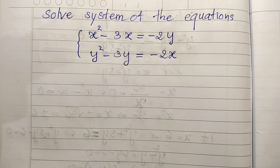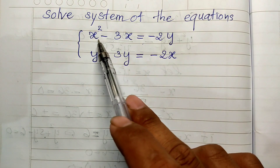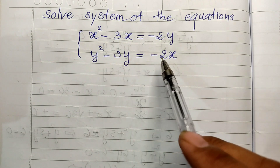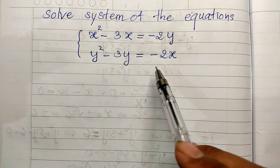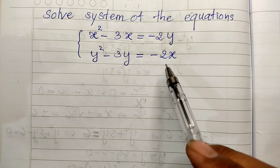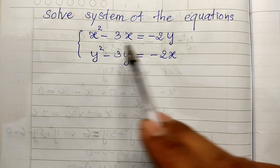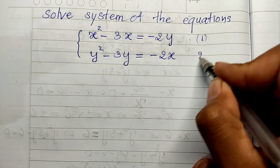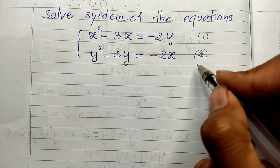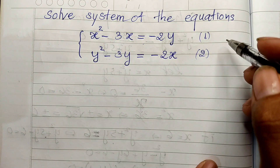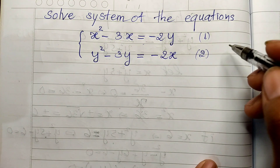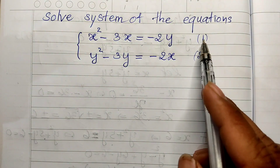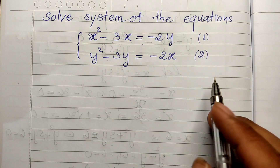Looking at this system, we have a second-degree equation in two variables, and again a second-degree equation in two variables. To solve this, we can use a useful trick: subtract the first equation from the second equation.